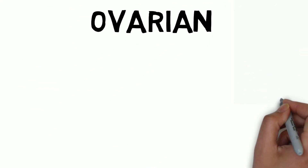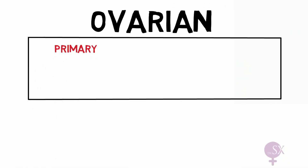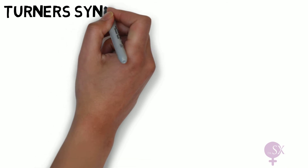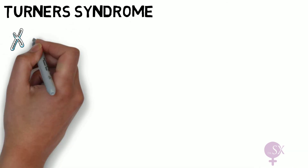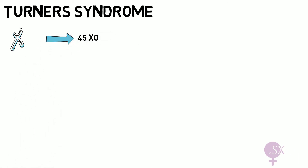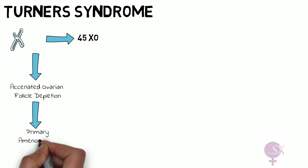Now we move on to the ovarian causes. First on the list causing primary amenorrhea is Turner syndrome — the most common cause of primary amenorrhea. Turner syndrome occurs when, instead of having the usual XX or XY sex chromosomes, there is a single X chromosome; most patients have a karyotype of 45,XO. In these patients, the ovaries are replaced by functionless fibrous tissue, because the missing X chromosome results in accelerated follicle depletion. By 2 years old, no follicles are left, resulting in amenorrhea.